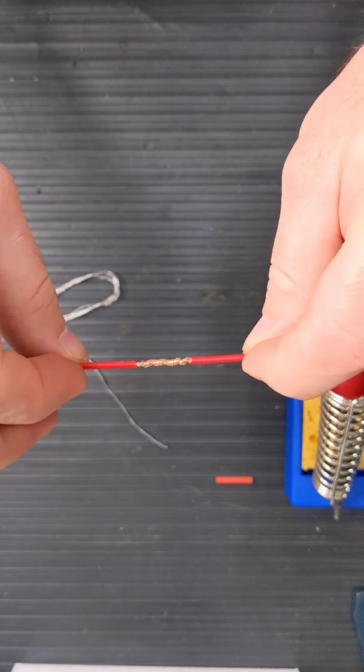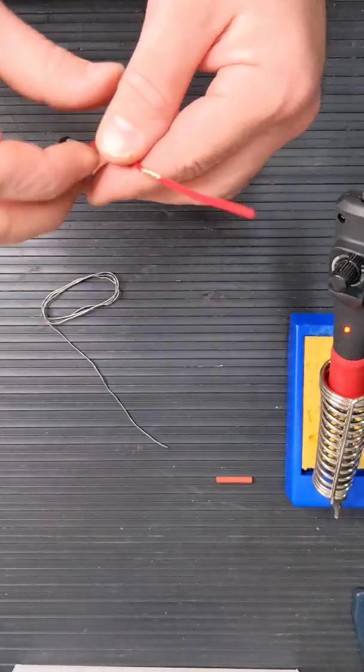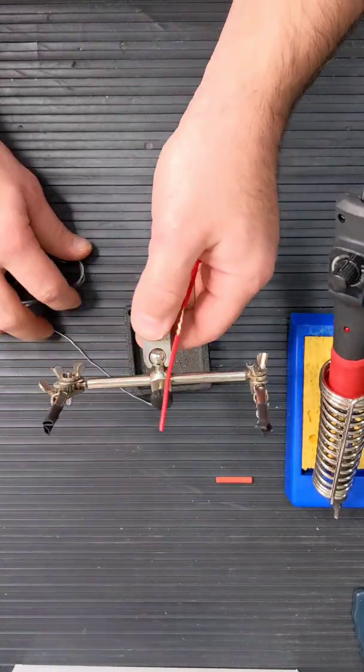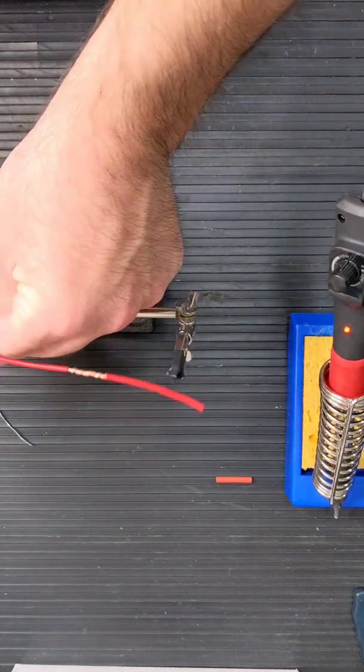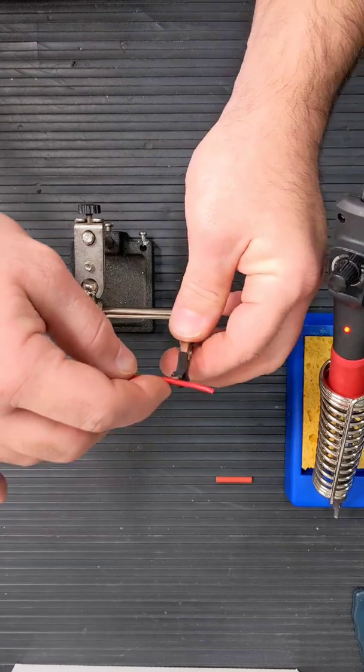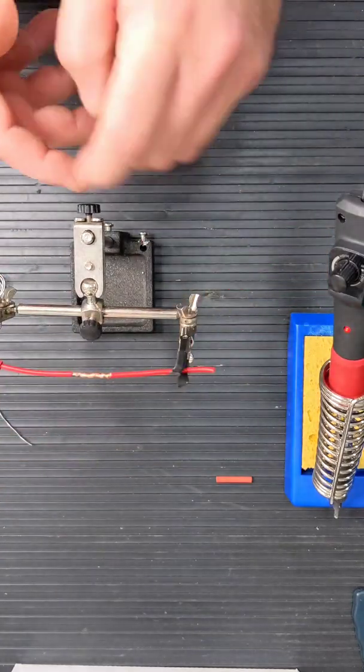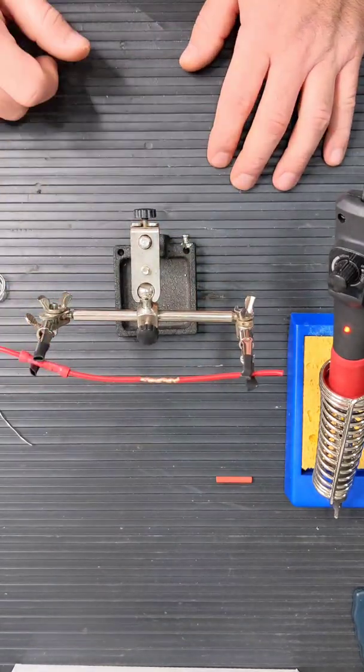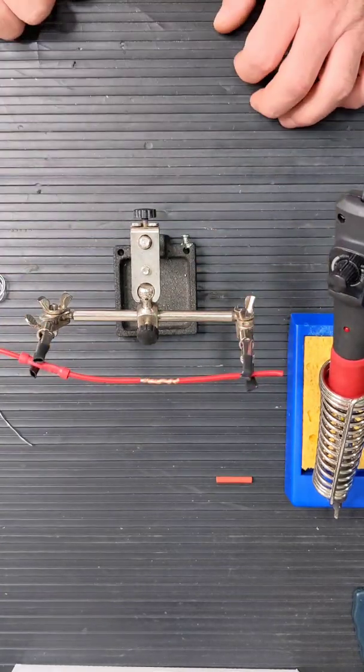That's what it should look like. You want to get your third hand or your helping hand, put that in there. Always a good idea when you have your helping hand to put some heat shrink on it, because they're very sharp edges on the alligator clip. So a good tip is to put some heat shrink on it.